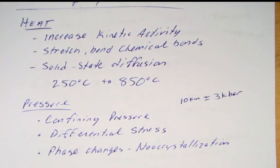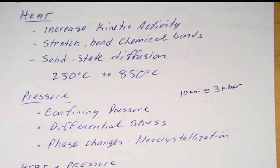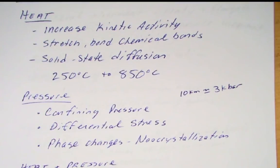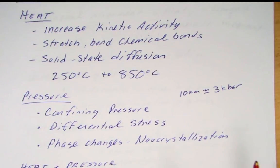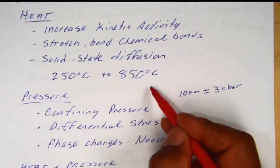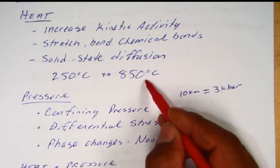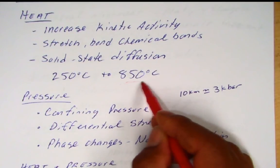What is heat doing? Heat may be the most important agent of metamorphism because it increases kinetic energy — the vibration of atoms and molecules. It can stretch and bend chemical bonds and cause recrystallization and neocrystallization of metamorphic minerals. This occurs in the solid state through diffusion.